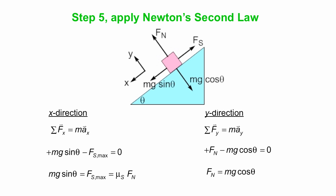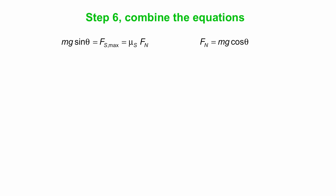Now what we're going to do is put our equations together. So the left shows what we got from the x direction, the right shows what we have from the y direction. Note that fn is in both of them, so we're going to replace the fn in our x equation by mg cosine theta, our result from the y equation. So we end up with mg sine theta is mu s times the normal force, but the normal force is mg cosine theta.